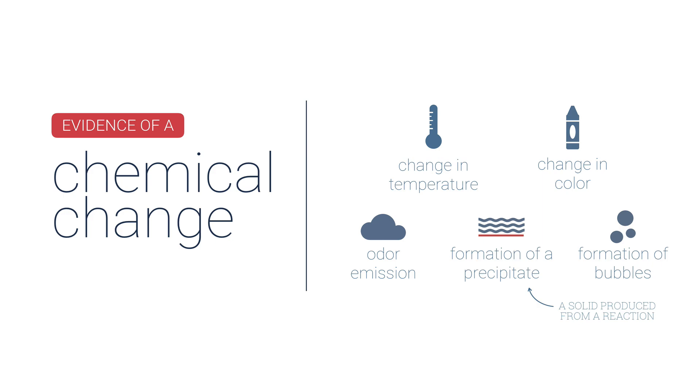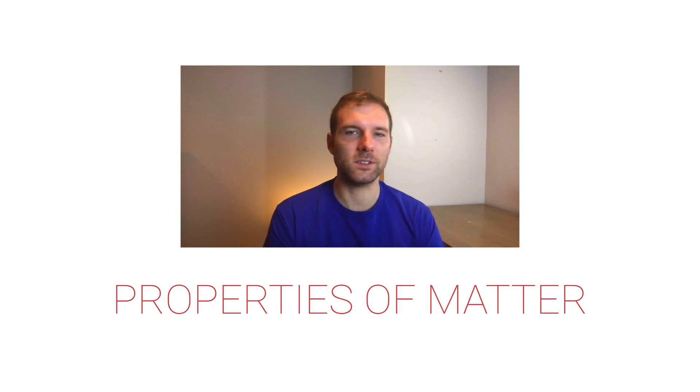So properties of matter, they can be physical, they can be chemical. Even if they're physical they can depend on amount, and so there's a few different types of physical properties. And then of course there's two different ways to change matter, both physically and chemically. Thank you.